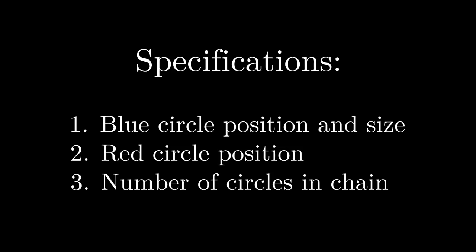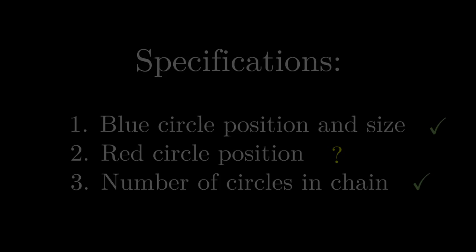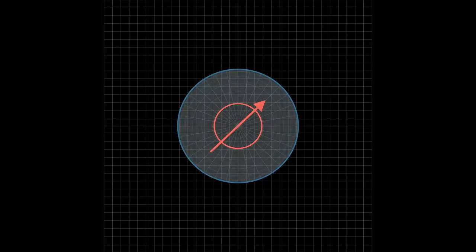That means that in order for our five-step method to reach every Steiner chain, we simply need to be able to set these three specifications to any arbitrary values. The size of the blue circle can be chosen by simply scaling the final image, and the number of circles in the chain is chosen right at the start when we construct the symmetric chain. The only thing we need to do now is check that we can arbitrarily choose the position of the red circle.